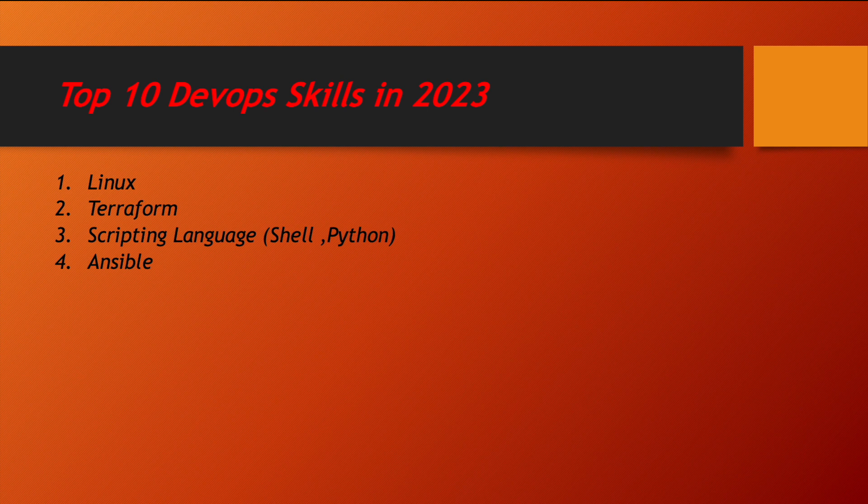Now, for code management — when you are dealing with a lot of code, where do you place your code? For that purpose GitHub is necessary. GitHub is a code management or version control tool where you can place all your code. You should have a basic understanding of GitHub; that's more than enough.